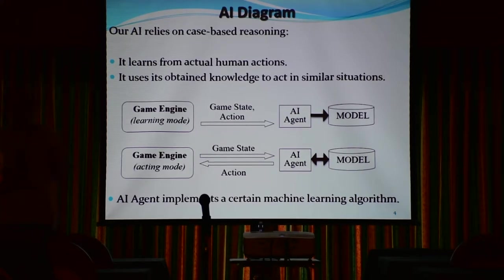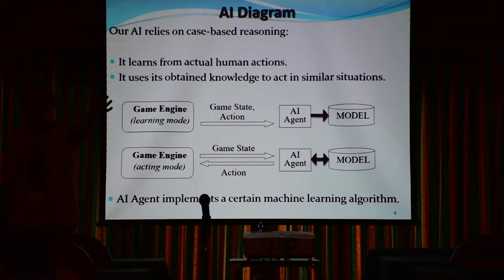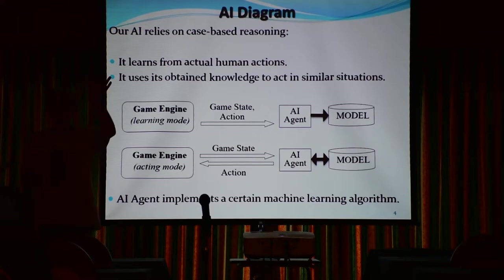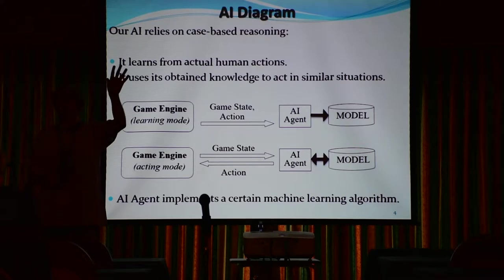How do you distinguish kittens from puppies? You show hundreds of pictures of kittens labeled 'kittens,' then hundreds of pictures of puppies labeled 'puppies,' and then you show a random picture and the computer has to answer 'that's a kitten.' Here it's the same. We show it: in that situation somebody did that action, in that situation that action — and then when the computer has to act, it says 'okay, what should I do in this case?'